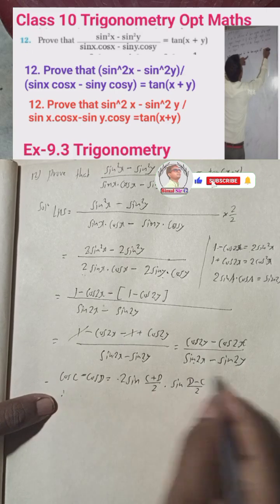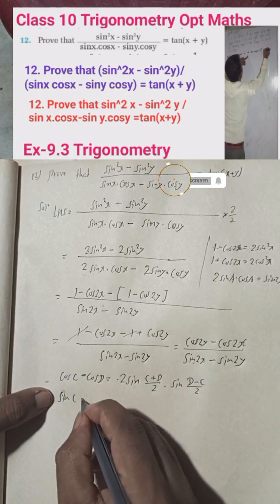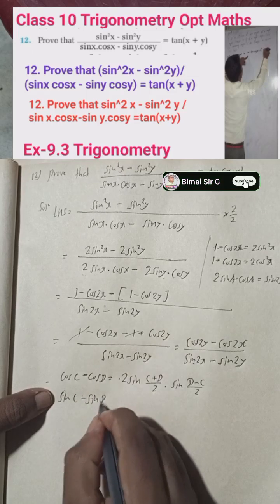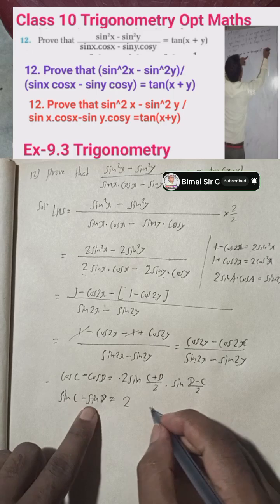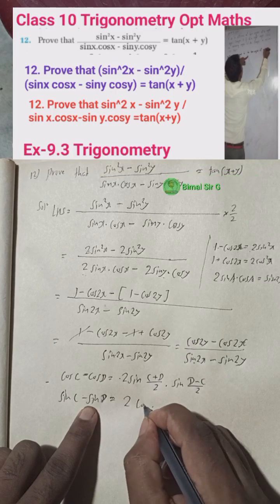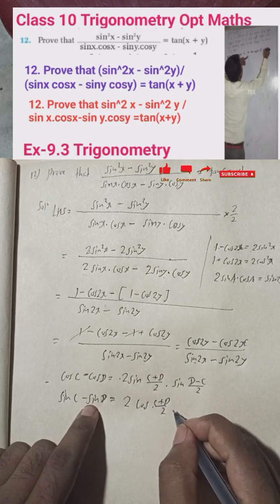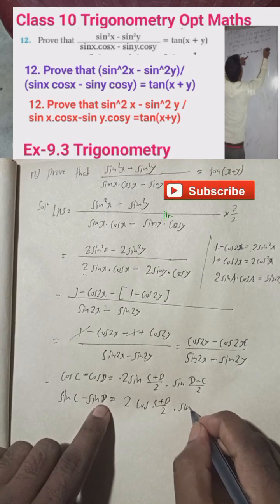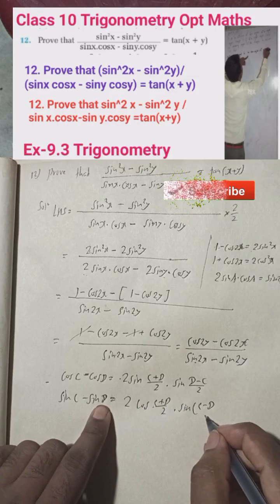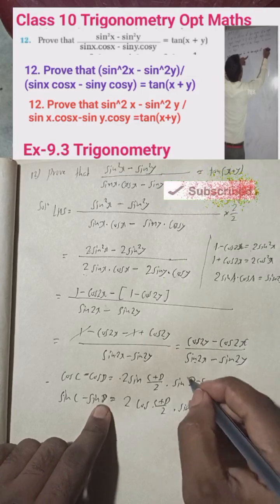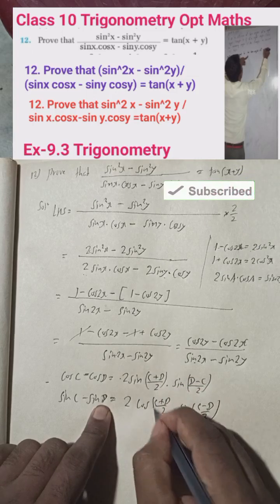For sinC − sinD, the formula is: 2·cos((C+D)/2)·sin((C−D)/2). You can take brackets — this is optional. We will now apply both these formulas to our expression.